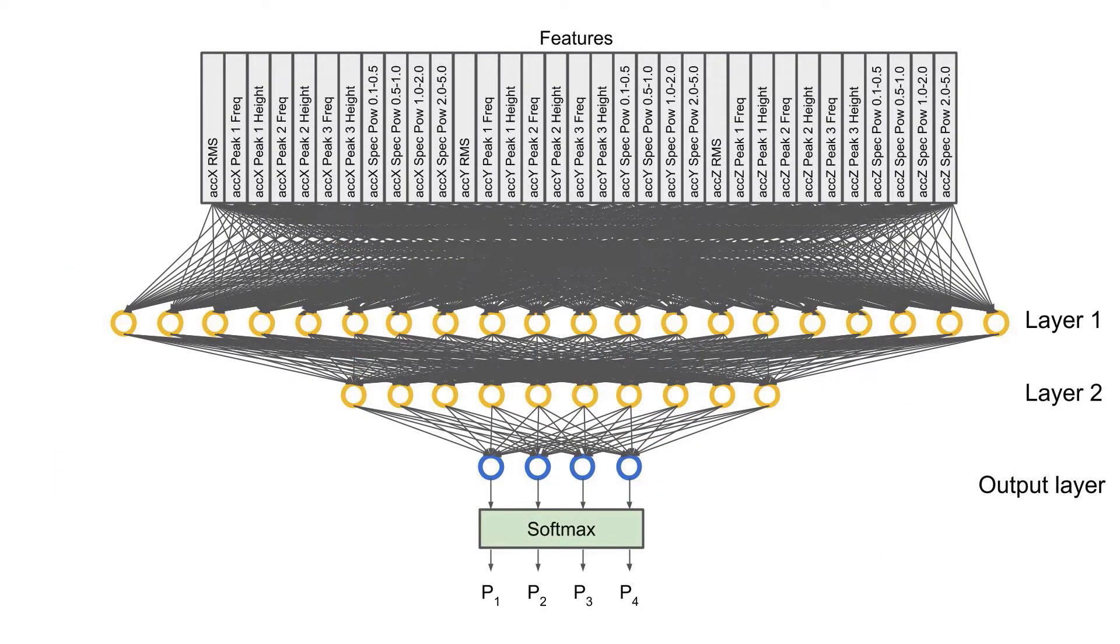The big takeaway is that this type of model will make a prediction and give a number of outputs equal to our classes. Each output corresponds to the probability that the model thinks the data belongs to that class.